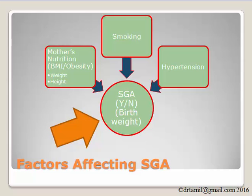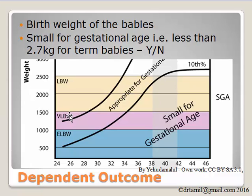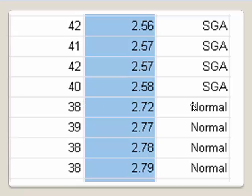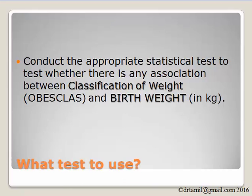This data is a study on factors affecting SGA. SGA is small for gestational age, defined as weight of less than 2.7 kg for term babies. For our dataset, those classified as normal have a weight larger than 2.7 kg, and those classified as SGA have a weight of less than 2.6 kg. The objective of this exercise is to conduct the appropriate statistical test to examine the association between classification of weight — defined as obese class — and birth weight.